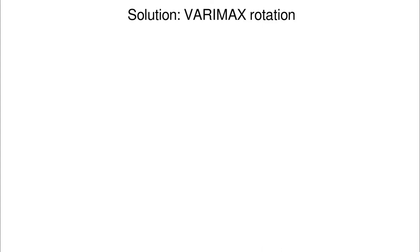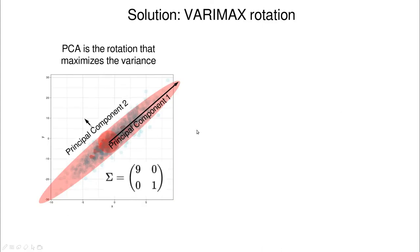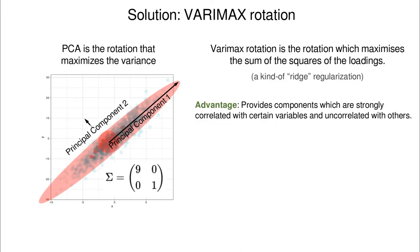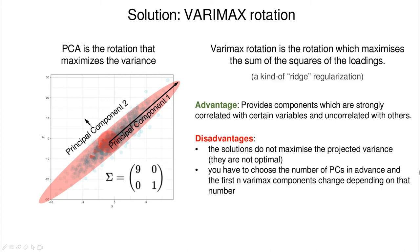The idea of varimax rotation is the following. Imagine that you have decided how many components you need — say one or two components to describe all the variance. Varimax rotation tries to maximize not the variance of each component, but the sum of the squares of the loadings — a kind of regularization. The advantage is that it provides components which are strongly correlated with certain variables and completely uncorrelated with the others. One disadvantage is that the solutions do not maximize projected variance, so the components are not optimal, and you must choose the number of PCs in advance, since changing that number changes the final rotated principal component.